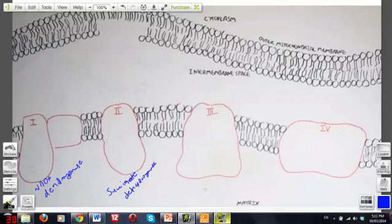Complex 3 is called cytochrome C-oxoreductase. I'll just abbreviate it cytochrome C-oxoreductase. And complex 4 is lastly called cytochrome C-oxidase. I'll just say the same thing, but instead I'll put oxidase here.